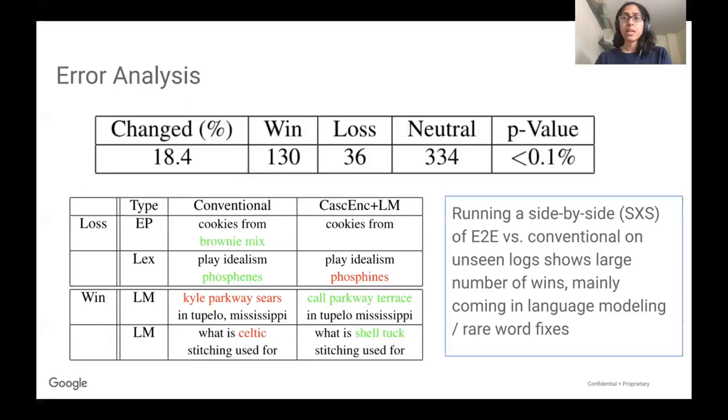We also did some error analysis on logs of data. This is unseen data, and here we can see that we've changed about 18.4% of the traffic, and the end-to-end model has 130 wins compared to 36 losses. The losses generally come from end-pointer because we run faster, and also lexicon because we don't have phonemes like the conventional model does. Most of the wins are coming from rare words.